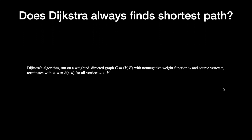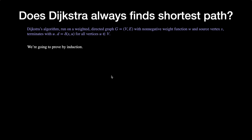An important question: does Dijkstra always find the shortest path? The theorem states: Dijkstra's algorithm runs on a weighted directed graph with non-negative weight function w and source vertex s, and terminates with u.d = δ(s, u) for all vertices u ∈ V. That is, the distance stored at every node u.d will equal the true shortest path δ(s, u) for every vertex.